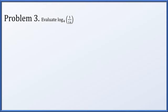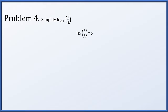In problem 3, evaluate the logarithm base 4 of 1 over 16. We set our expression equal to y and convert it to an exponential expression: 4 to the y equals 1 over 16. Since 1 over 16 is 1 over 4 squared, otherwise known as 4 to the minus 2, y equals minus 2. Problem 4: simplify the log base 4 of 1 over 4. We set our expression equal to y and convert to exponential form. Since 1 over 4 is 4 to the minus 1, y equals negative 1.